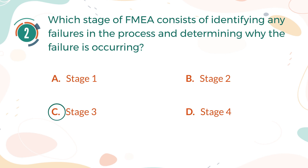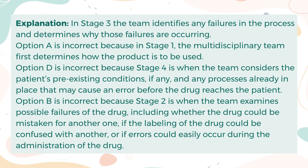The correct answer is C, Stage 3. Explanation: In Stage 3, the team identifies any failures in the process and determines why those failures are occurring. Option A is incorrect because in Stage 1, the multidisciplinary team first determines how the product is to be used. Option D is incorrect because Stage 4 is when the team considers the patient's pre-existing conditions, if any, and any processes already in place that may cause an error before the drug reaches the patient. Option B is incorrect because Stage 2 is when the team examines possible failures of the drug, including whether the drug could be mistaken for another one, if the labeling could be confused with another, or if errors could easily occur during administration.